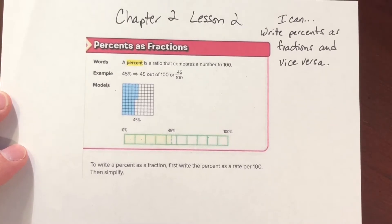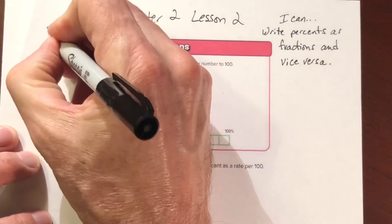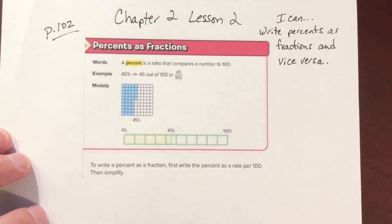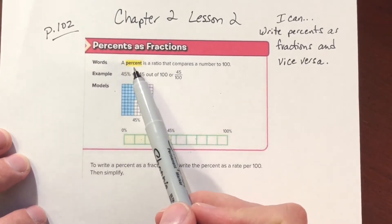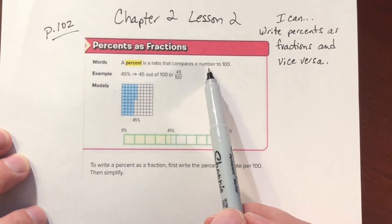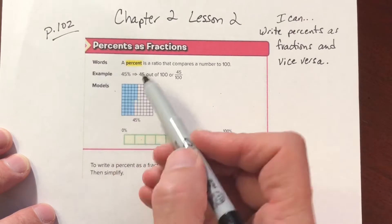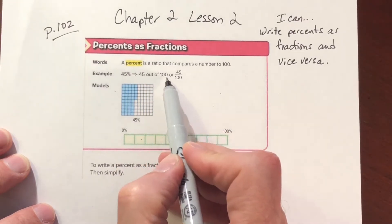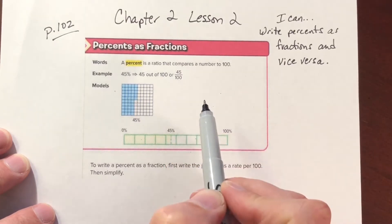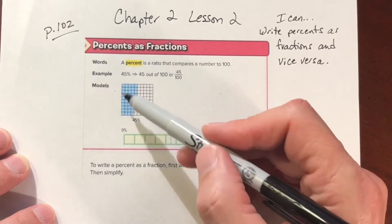This is on page 102. A percent is defined as a ratio that compares a number to 100. For instance, we have 45 percent, so it's 45 out of 100, or 45 over 100 — 45 hundredths. You can see we can even graph that and turn it into a chart.